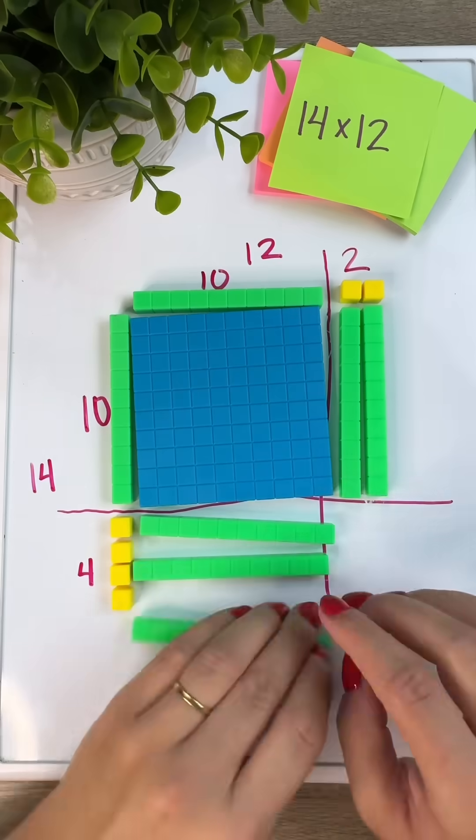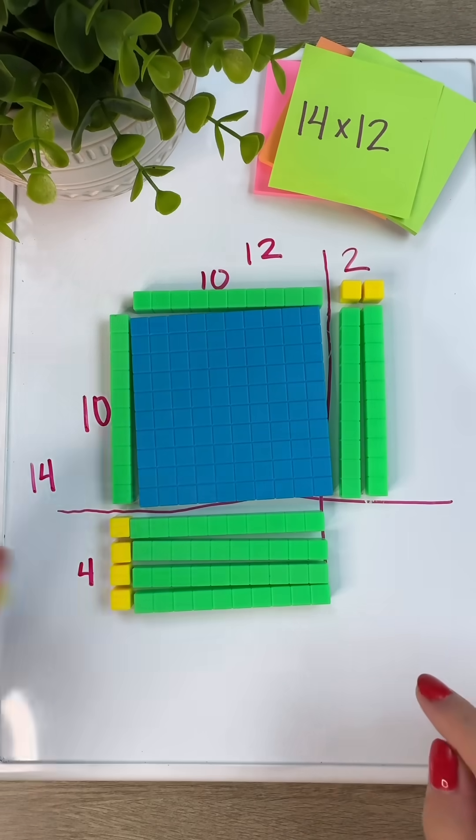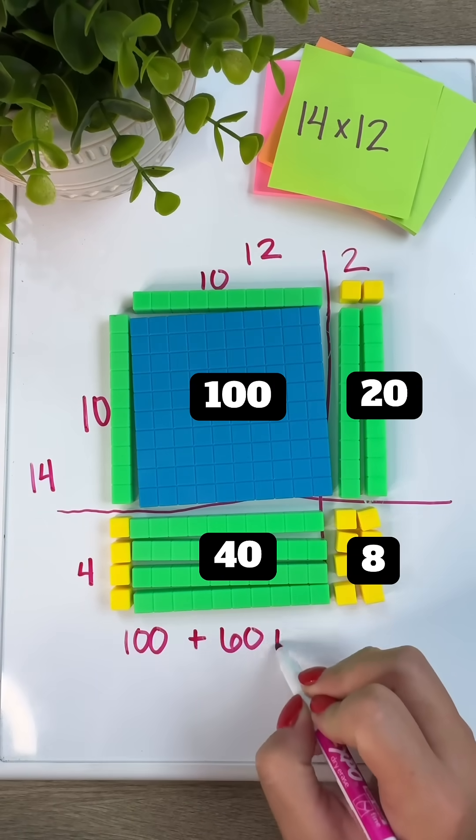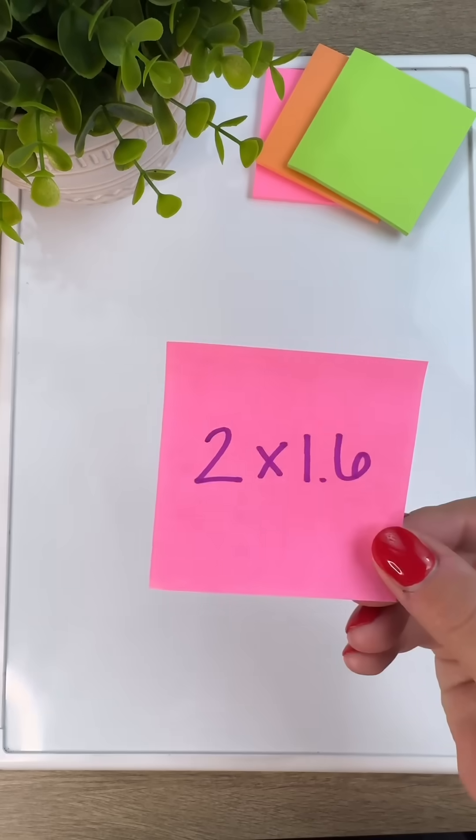We have modeled 10 times 10, 2 groups of 10, 4 groups of 10, and 4 groups of 2. Now we have a visual of the partial products within our area model. So 14 times 12 is 168.